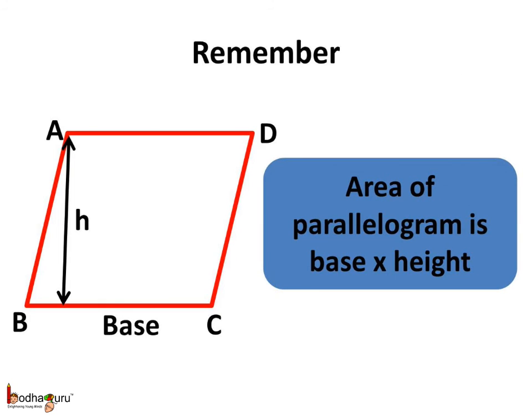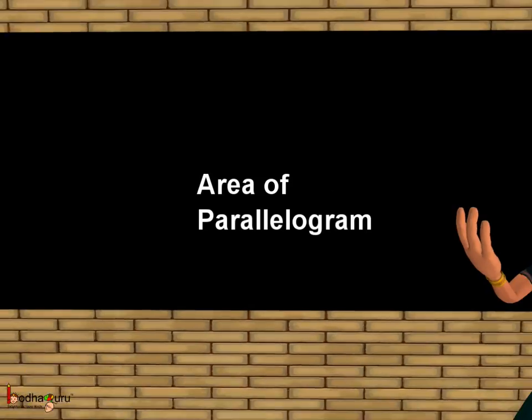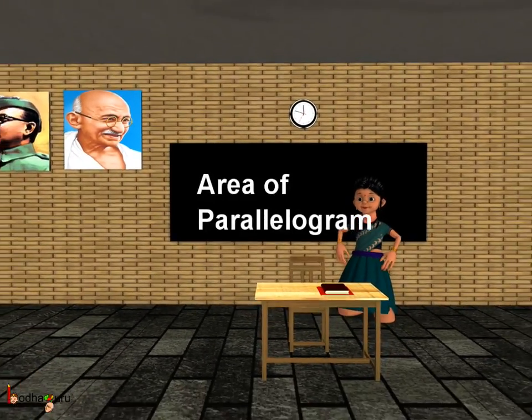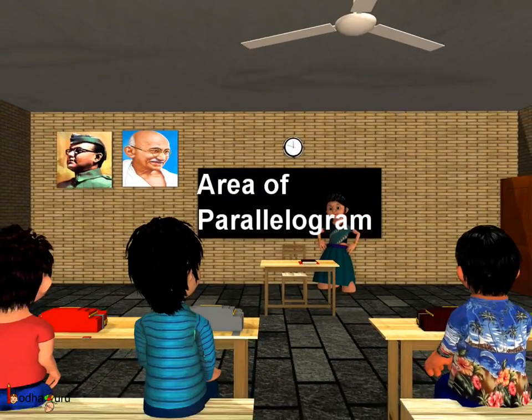Remember children, the area of a parallelogram is base multiplied by height. We can take any side of the parallelogram as the base, provided that the perpendicular drawn from the opposite vertex to that side is considered as the height for calculating the area using the formula base multiplied by height. That was all about the area of a parallelogram — base multiplied by height. Bye-bye children.